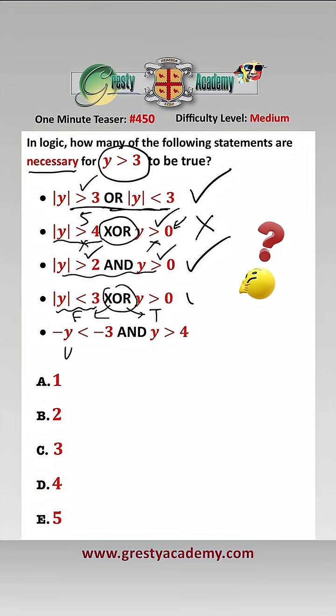And finally for the fifth one, we can rewrite that as y greater than 3, so if y is greater than 3, then y is greater than 3, and y is greater than 4, well that's not necessarily true, for example if we took y equals 3.5, so that is not necessary, and therefore the number that is necessary is 1, 3, which is answer C.